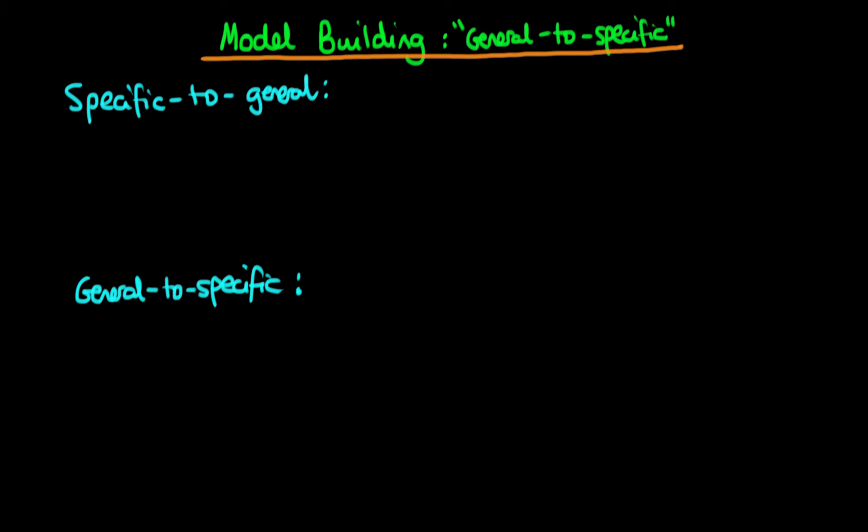In this video, I want to talk about how once we've assembled all of our data into a statistical software package, we can then go ahead and start to build econometric models of situations. The particular process I'm going to advocate is known as general-to-specific modelling, which is often credited to David Hendry.